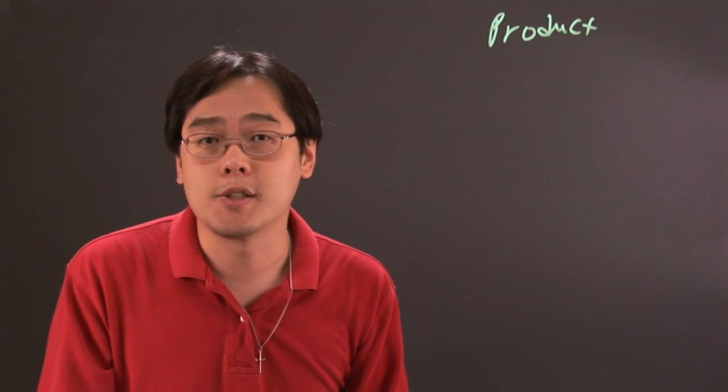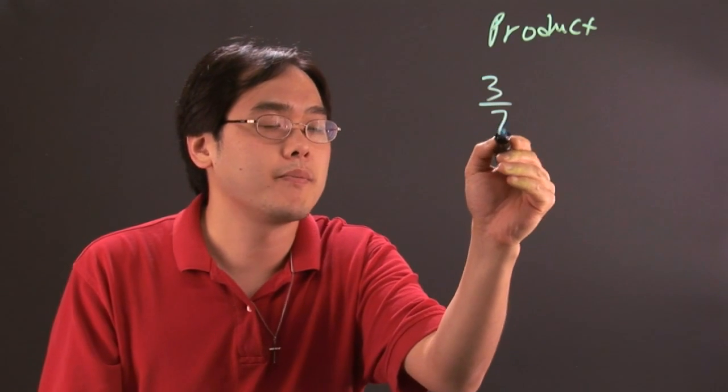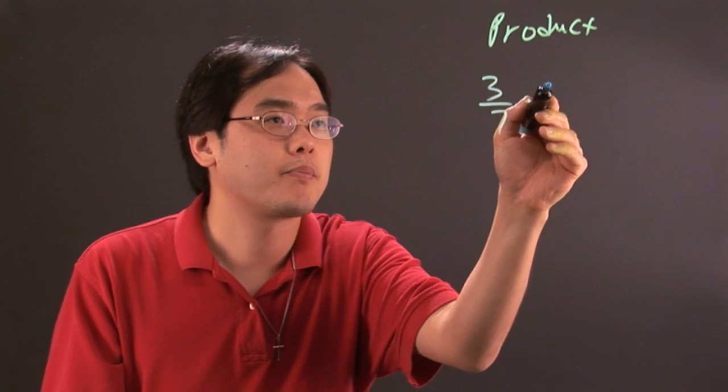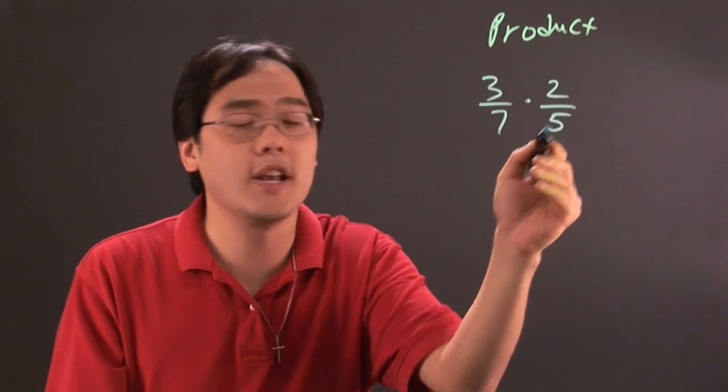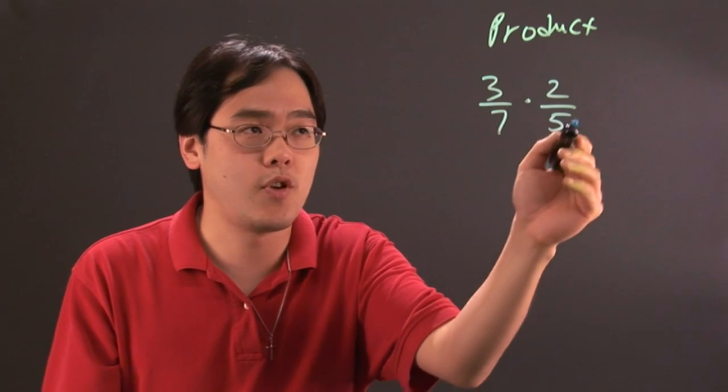Once you have that, it's pretty straightforward as long as you know what to do. Suppose you have 3 sevenths and you want to multiply 2 fifths and you want to find the product. Product means you want to multiply those two fractions.